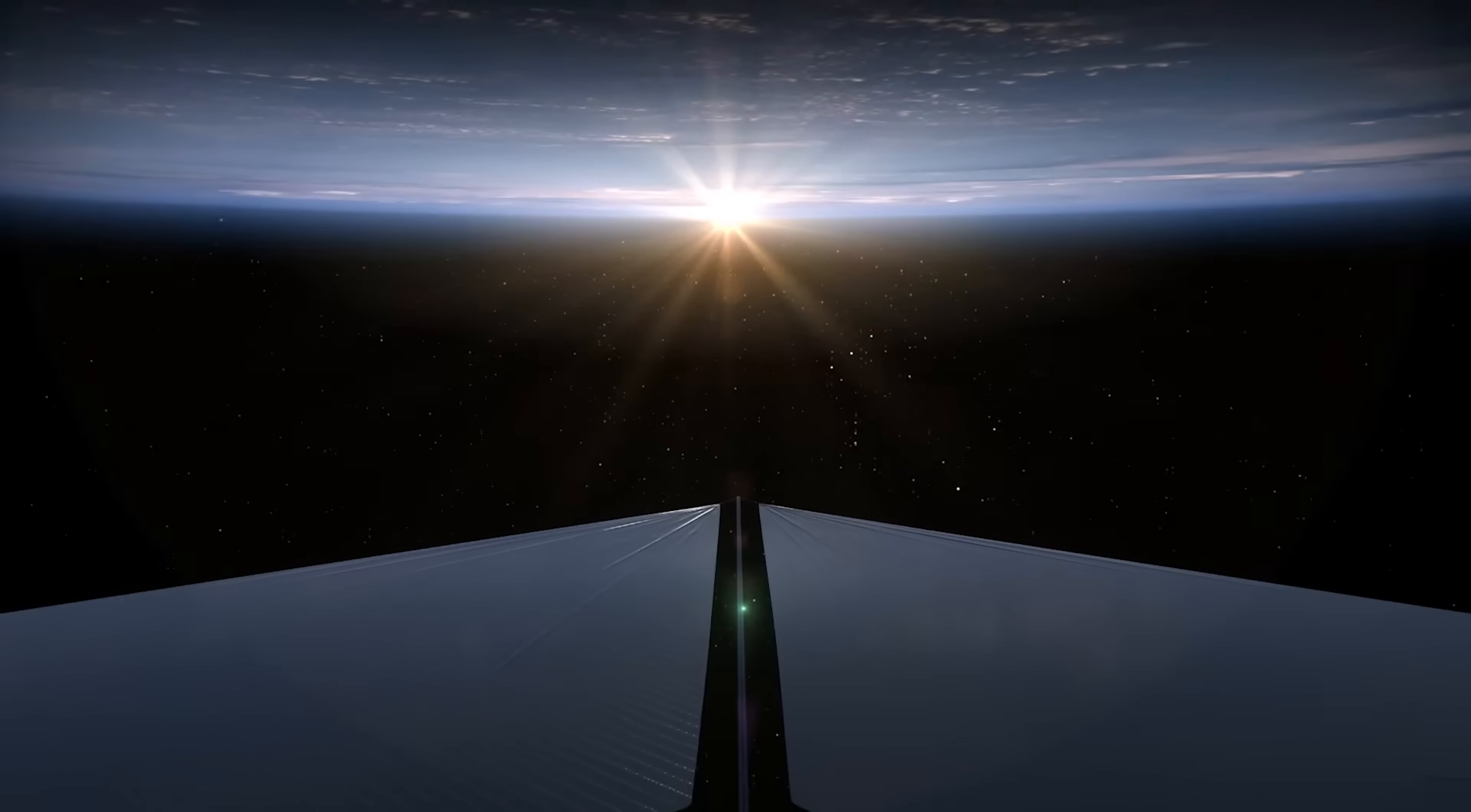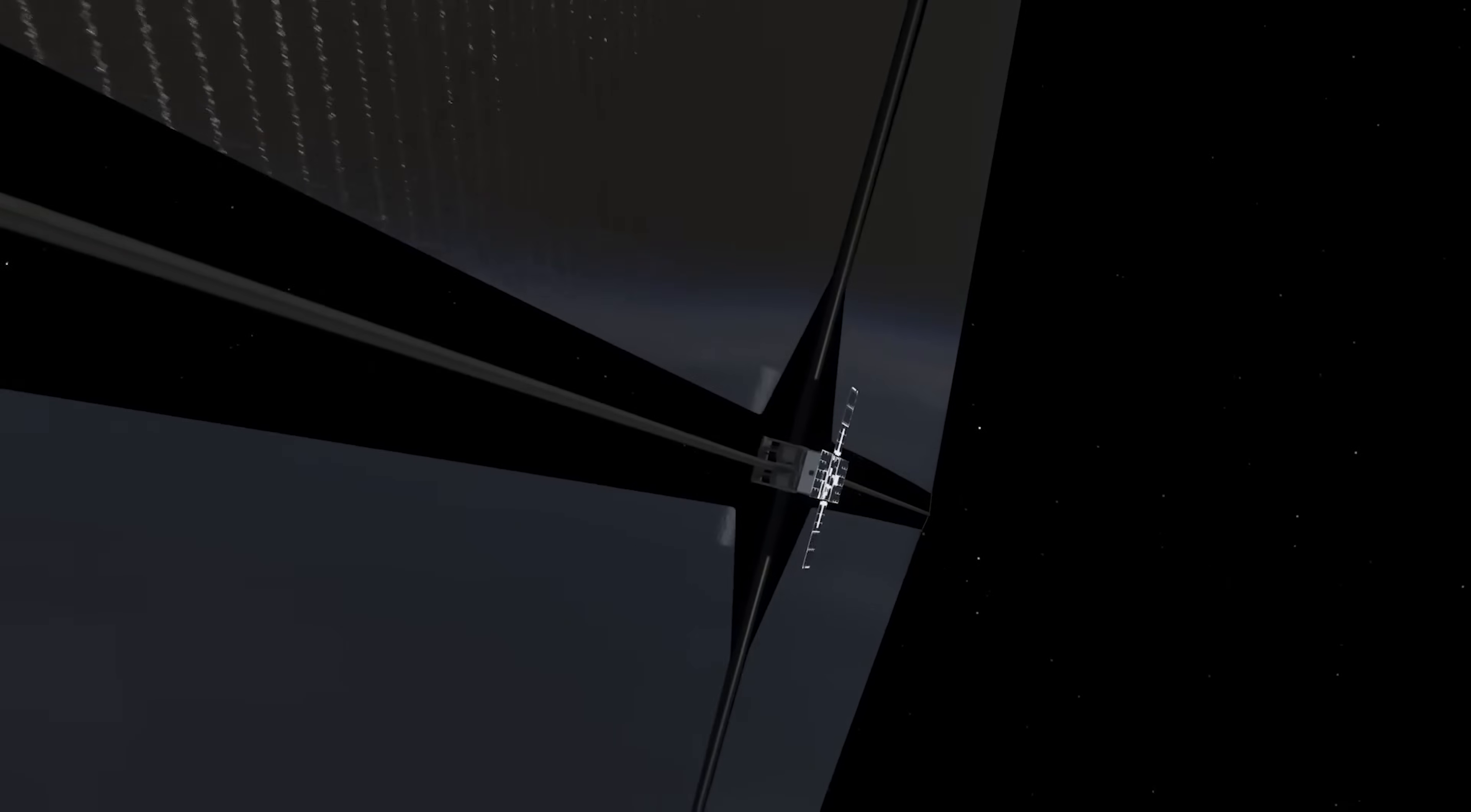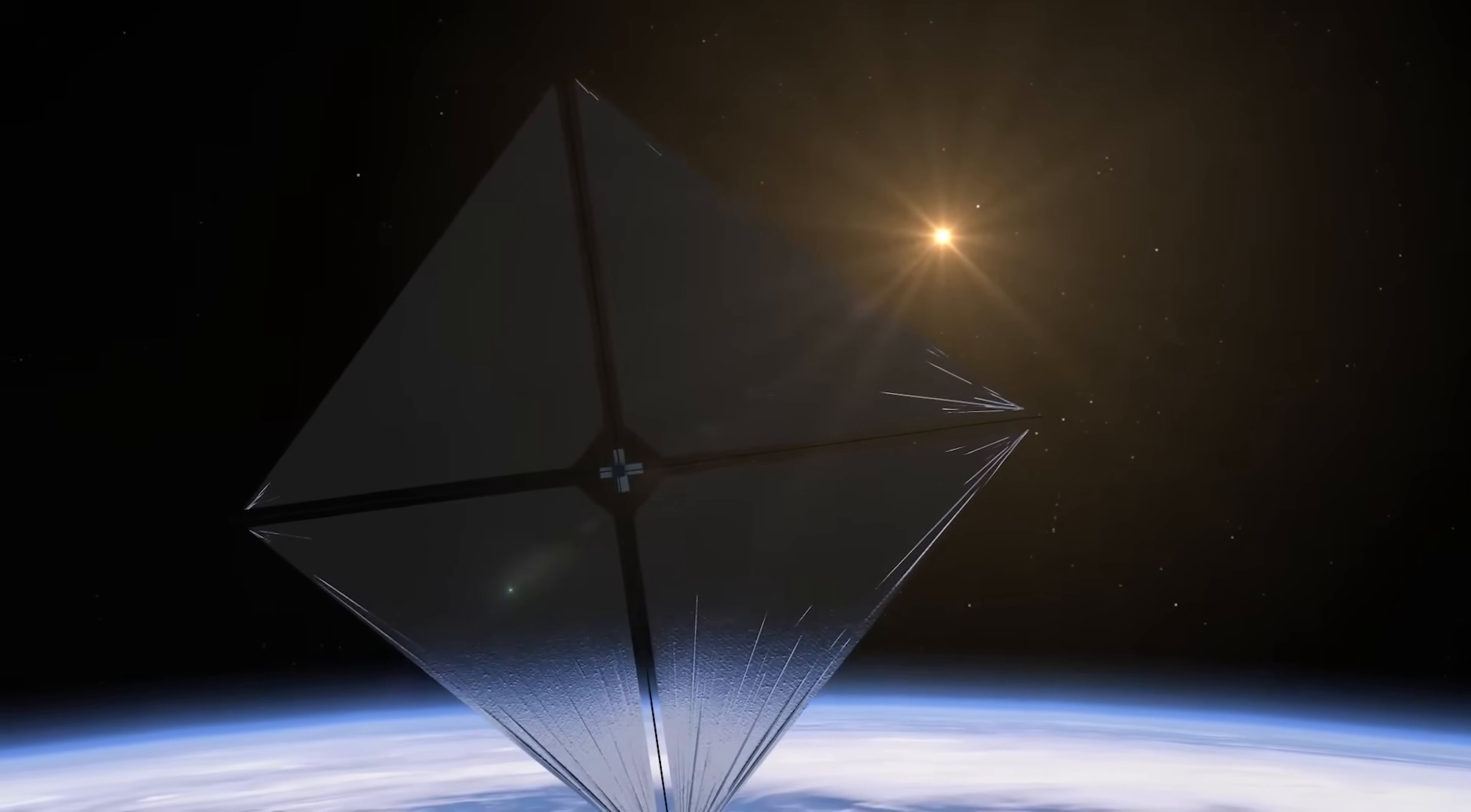The method used to propel spacecraft using a light sail, or solar sail, is a fascinating concept. It relies on radiation pressure, the force exerted by sunlight on large reflective surfaces. One way to visualize this is by imagining a ball being thrown at a sheet of paper. When the ball hits the paper, it transfers momentum, pushing it backward. In a similar way, photons, particles of light, transfer their momentum when they strike the sail, gradually propelling the spacecraft forward.